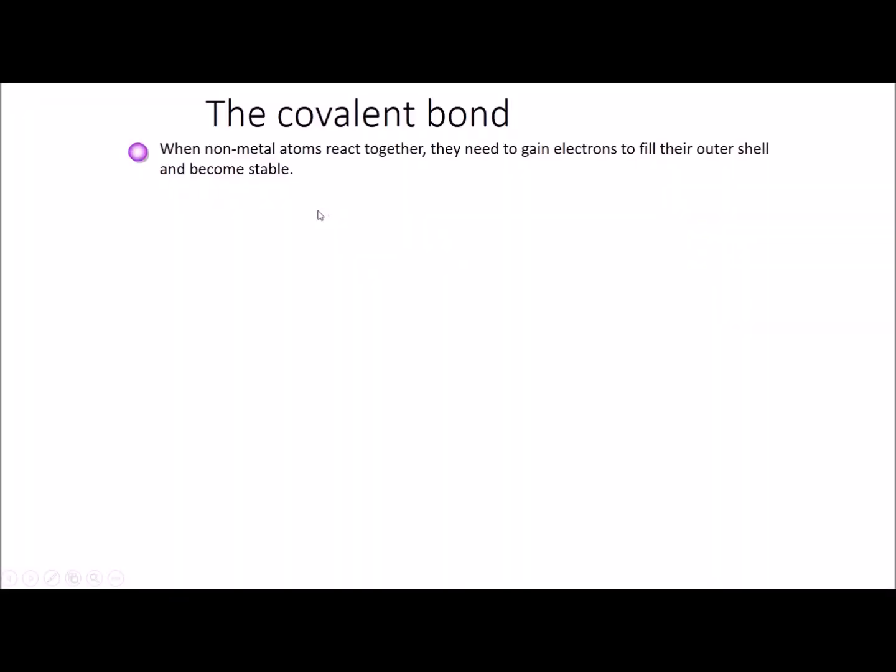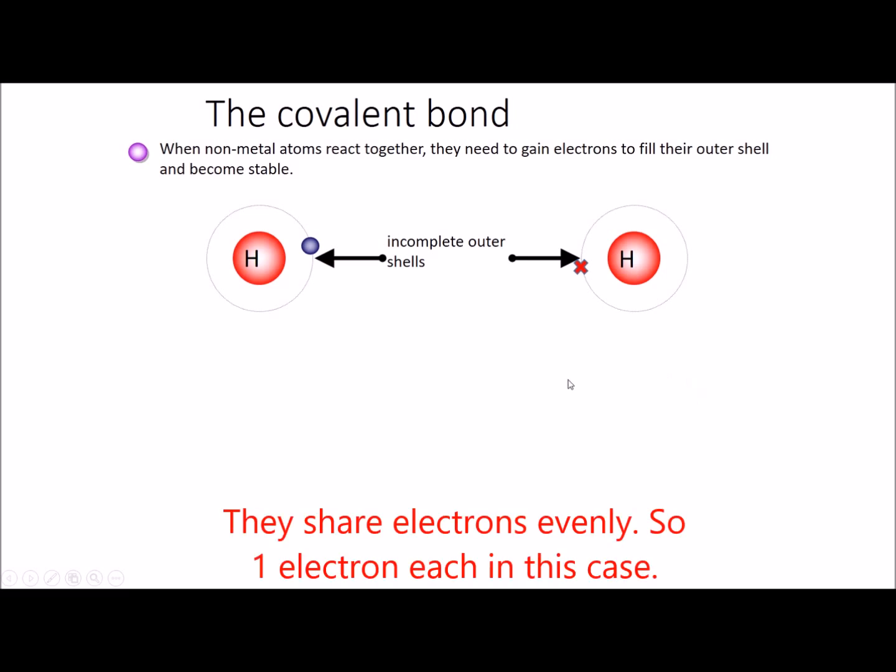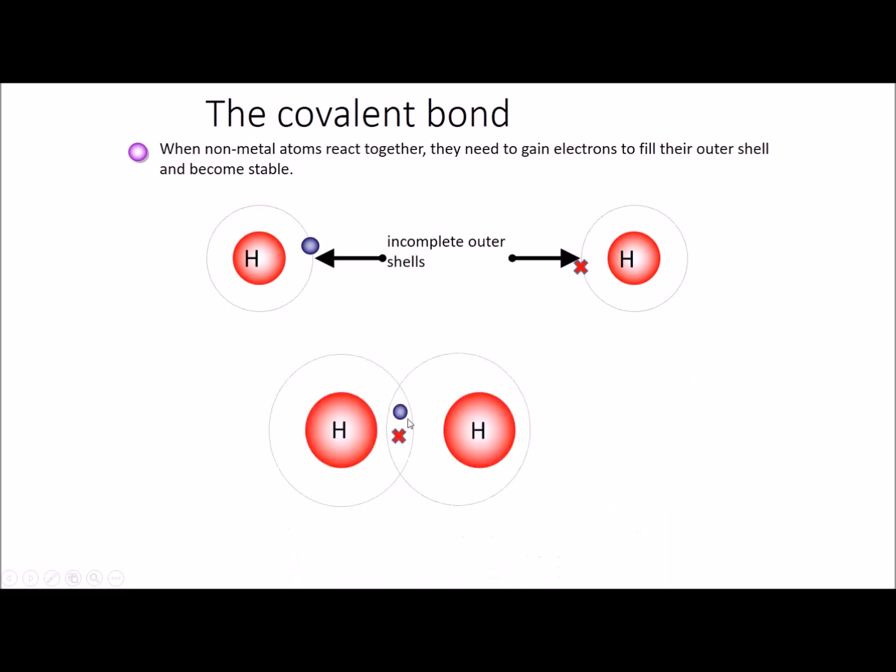A covalent bond is a type of bond between non-metal atoms. So for example, I've got two individual hydrogen atoms over here, and you will notice that they only have one electron in the outer shell, which means that they have incomplete outer shells. This makes them very unstable, so to become stable they share electrons and form a covalent bond.